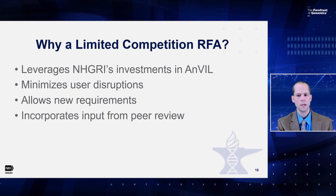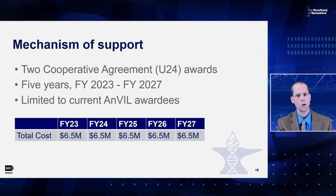One concern in going with the existing teams, whether limited or open competition, is locking ourselves into a single platform. This is where we plan to take advantage of the ability to specify new requirements in the RFA to ensure ANVIL is positioned to take advantage of multiple compute platforms and technologies. In short, given the successes of ANVIL, we're excited to keep moving forward and think a limited competition RFA is both the best and most transparent way. Through this RFA, we plan to support two cooperative agreement U24 awards for five years. The applicants will be limited to the current ANVIL awardees. We plan to commit $6.5 million per year in total cost, flat with the current cost of ANVIL. With that, I'll turn this over to Ken to talk about our plans for the clinical side of ANVIL.